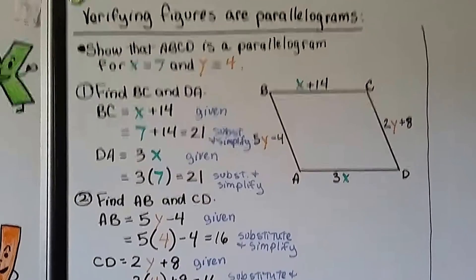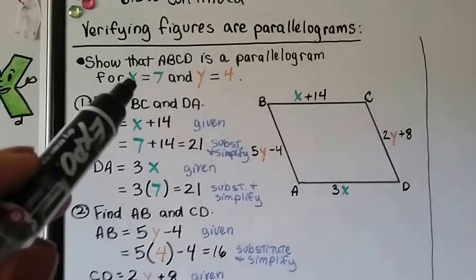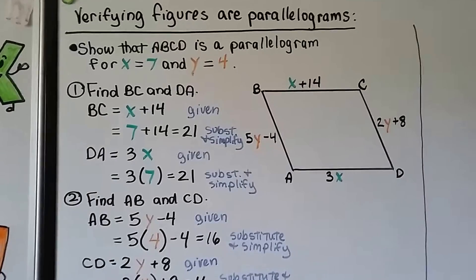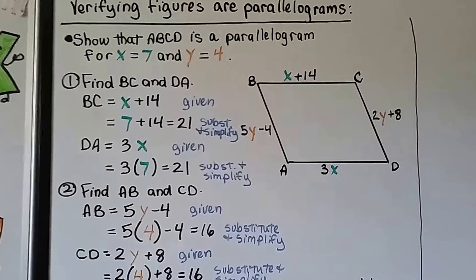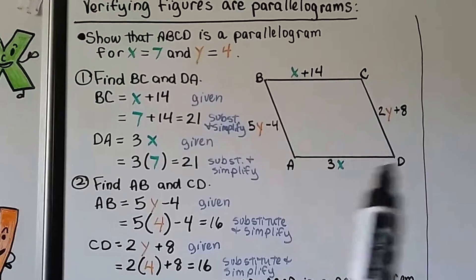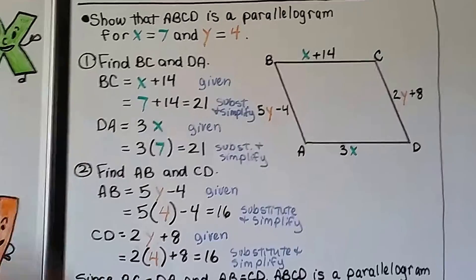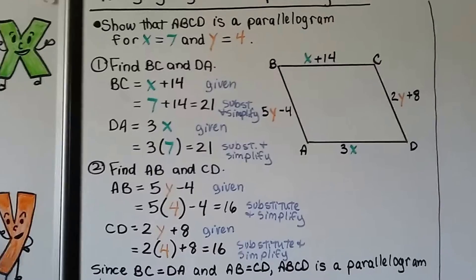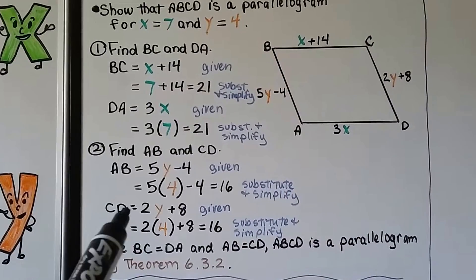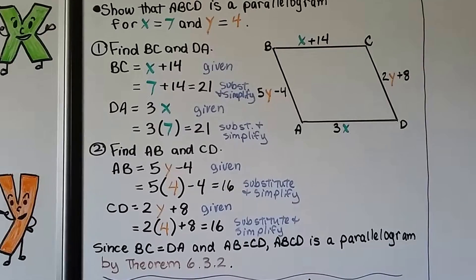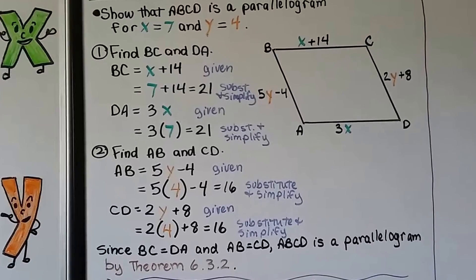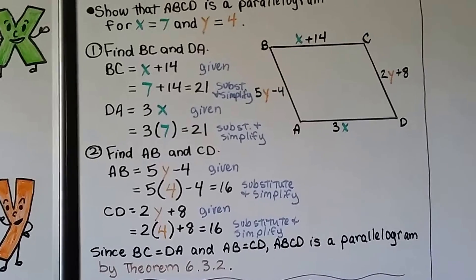Now we'll verify that ABCD is a parallelogram for x = 7 and y = 4. Each side is given as an algebraic expression. BC equals x + 14 = 7 + 14 = 21, and DA equals 3x = 3 × 7 = 21 — they match. AB equals 5y − 4 = 5 × 4 − 4 = 16, and CD equals 2y + 8 = 2 × 4 + 8 = 16 — they match. Since BC = DA and AB = CD, ABCD is a parallelogram by theorem 6.3.2, which states both pairs of opposite sides of a quadrilateral are congruent.